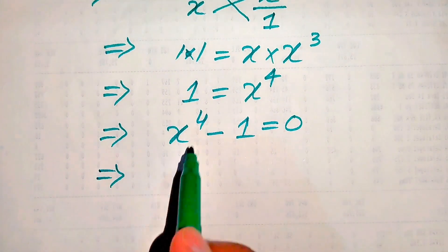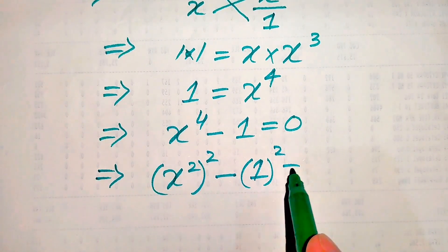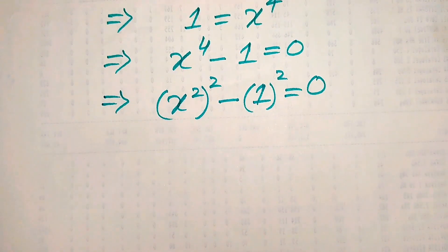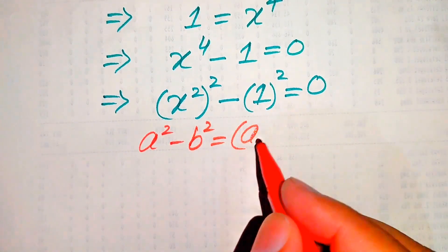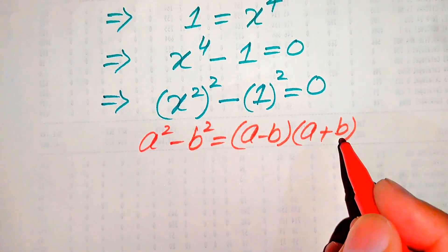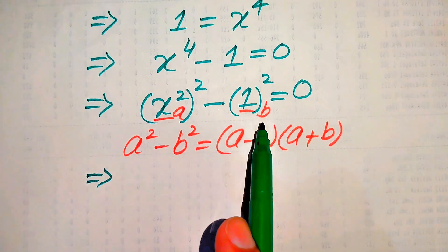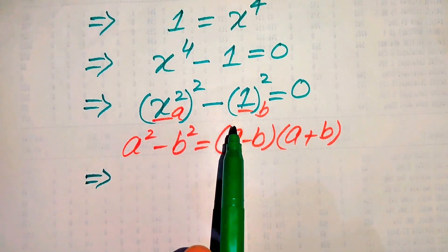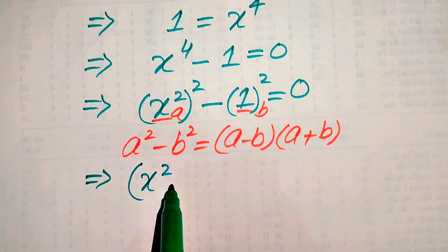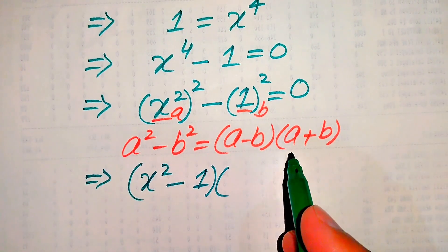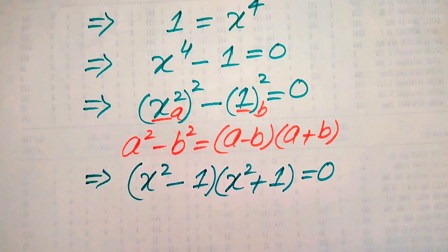We rewrite the equation as x squared whole squared minus one squared equals zero. Here we use the nice algebraic formula: a squared minus b squared equals a minus b times a plus b. The base of the first term is our a and the base of the second term is our b. Expanding, we get x squared minus one, times x squared plus one, equals zero.